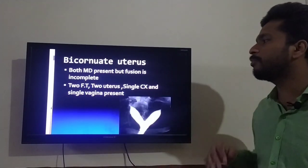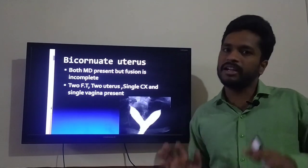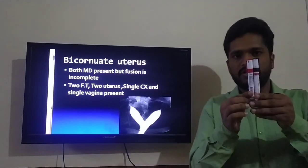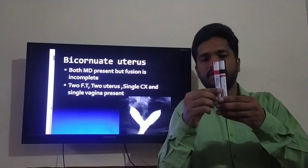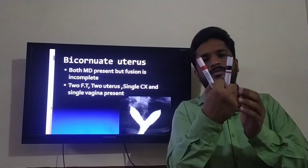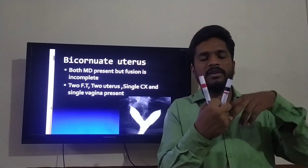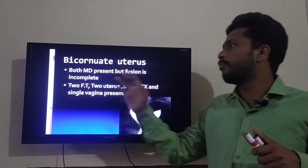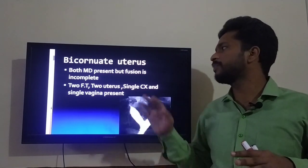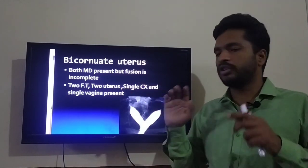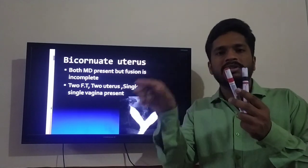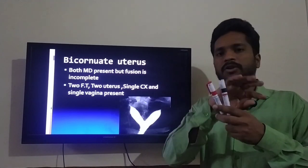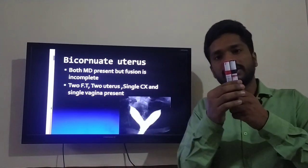Now we will talk about bicornuate uterus, which is Class IV. In bicornuate uterus, both Mullerian ducts are present but fusion is incomplete. The upper structures will be two in number but the lower structures will be single. Since fallopian tubes are normally two in any case, the patient has two fallopian tubes. The upper ends form two uteri.